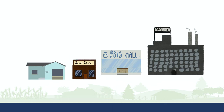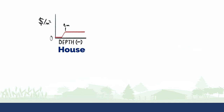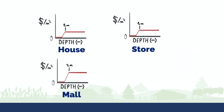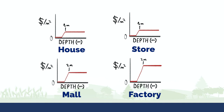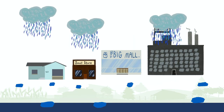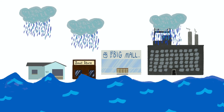LIDAR lets us measure very accurately the ground-level elevation of buildings — houses, stores, shopping malls, factories. As a flood rises, these different buildings are damaged to different levels.